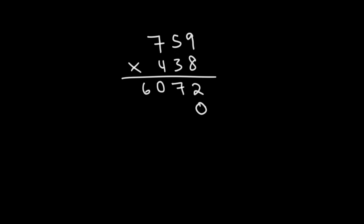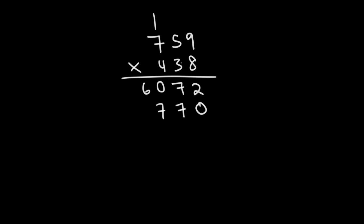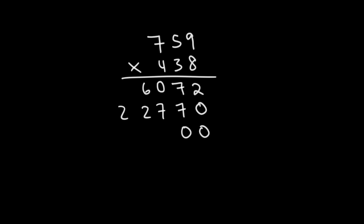Now add a 0. 3 times 9 is 27, so write the 7 and carry the 2. 3 times 5 is 15 plus 2, that's 17. So let's write the 7 and carry the 1. And then 3 times 7 is 21 plus 1, that's 22. Now we're going to write 2 zeros instead of 1 before we go into the 4s.